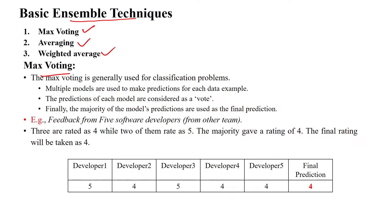In maximum voting, we use multiple models — model one, model two, model three, model four, model five. From model one we got output five, from model two output four, and so on. We get five outputs total. From those five outputs, we select the maximum number of occurrence.